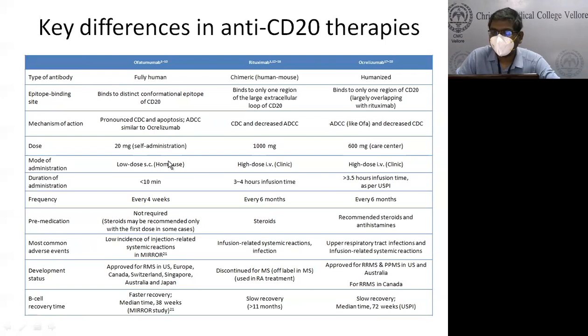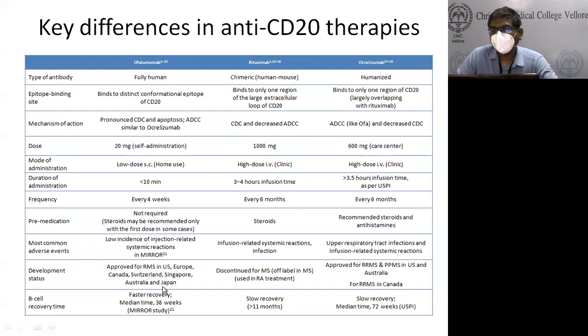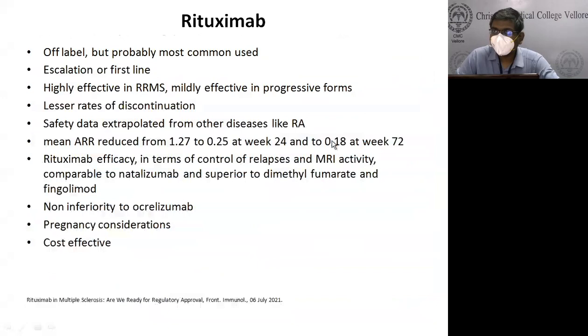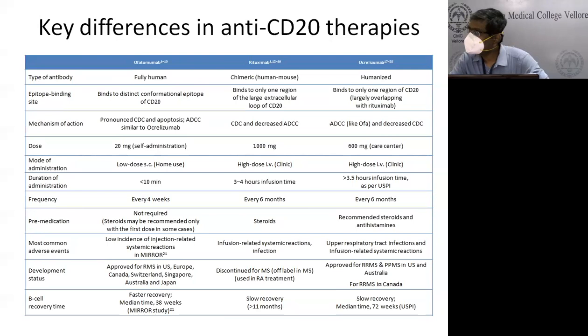Ofatumumab, approved in 2020, can be administered at home because it is fully humanized and binds to a different CD20 epitope. It functions like an auto-injector pen administered subcutaneously every four weeks at home, with no need for pre-medication. In contrast, rituximab and ocrelizumab require hospital admission, pre-medications such as steroids and antihistamines, and have longer infusion times.